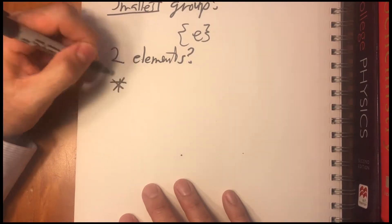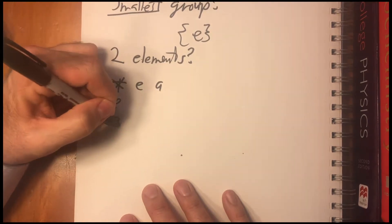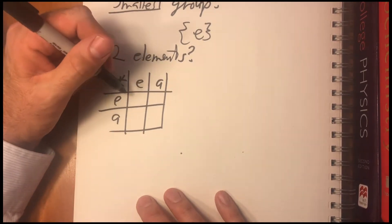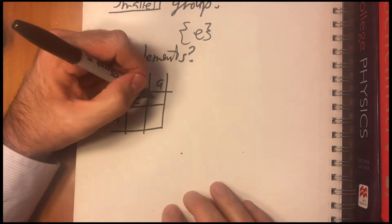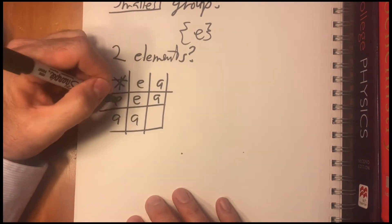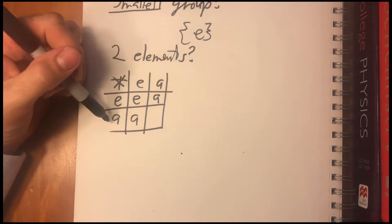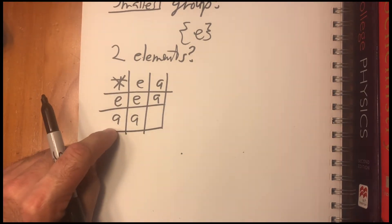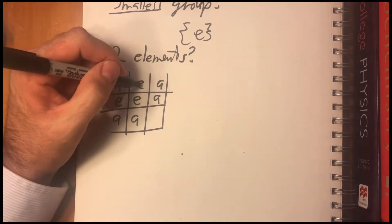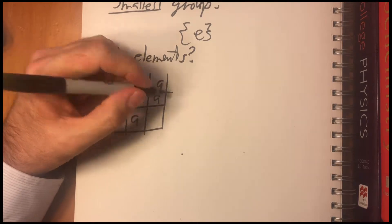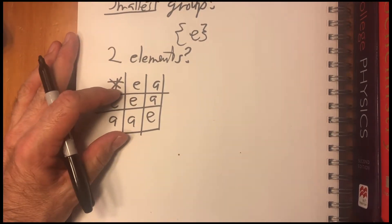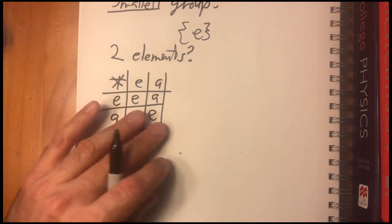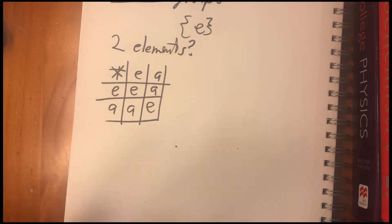Is there a group with two elements? Yes. So we can make a table. We know there has to be an identity element. That's one of the properties. So E times E has to be E. E times A has to be A, and A times E has to be A. So the question is then, what is A times A going to be? Well, remember, every element has to have an inverse. So there has to be some number that you multiply by A to get you back to the identity. That has to be itself. So A times A must take you back to E. So this is the two-element group. And the coolest thing about it, it's the only two-element group. There's no other way of doing this.